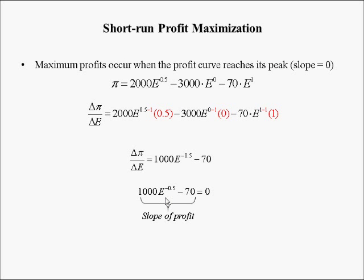For example, if E = 1: √1 = 1, so 1,000/1 − 70 = 930 (positive). If E = 10,000: √10,000 = 100, so 1,000/100 − 70 = 10 − 70 = −60 (negative). This confirms the equation is saying exactly what the graph showed — there is an optimal E where slope equals zero.